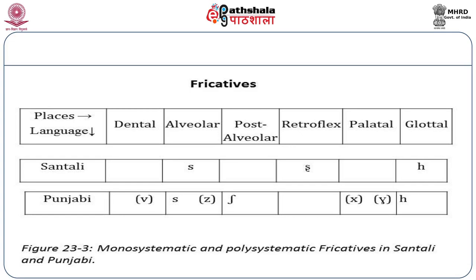Punjabi, however, seems to have seven fricatives. Three of them are regular—they contrast—but four of them have marginal status. What this means is that they may or may not be used in contrast with other sounds of the language. When they are used contrastively, they are phonemes; when they freely vary with other sounds, they are not phonemes.